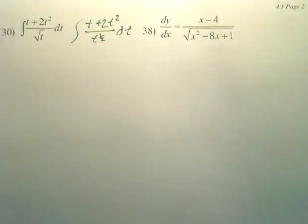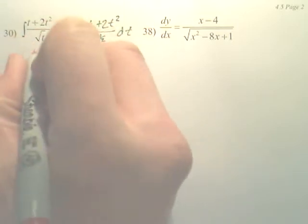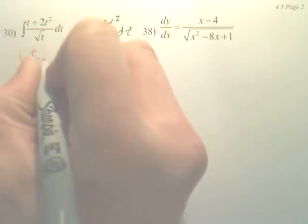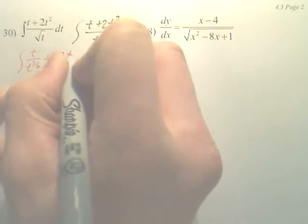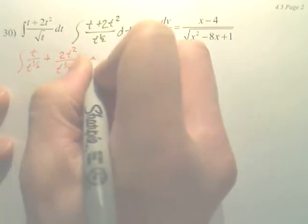When you do that, you'll end up with t over t to the 1 half plus 2t squared over t to the 1 half dt.